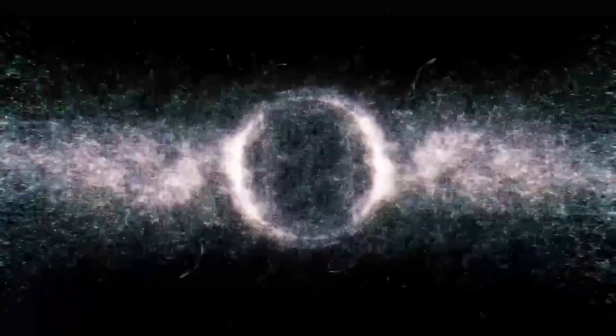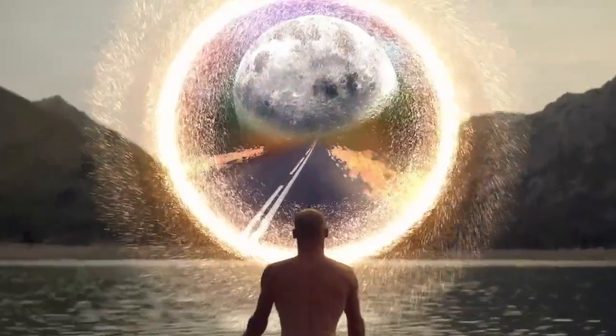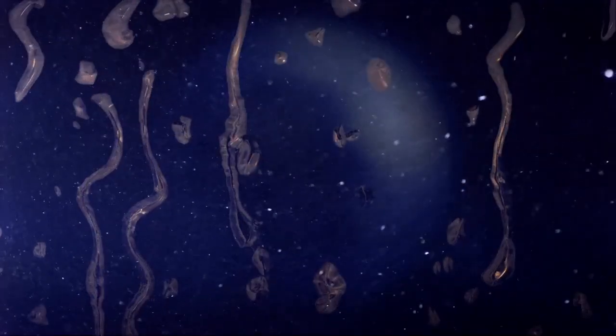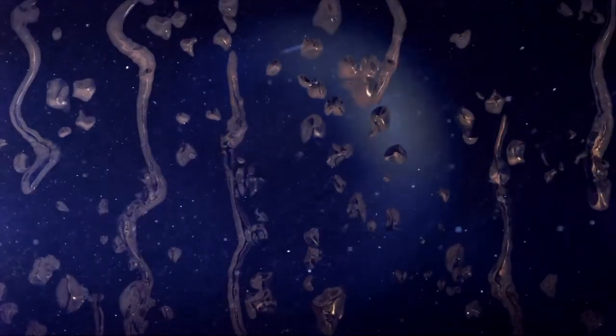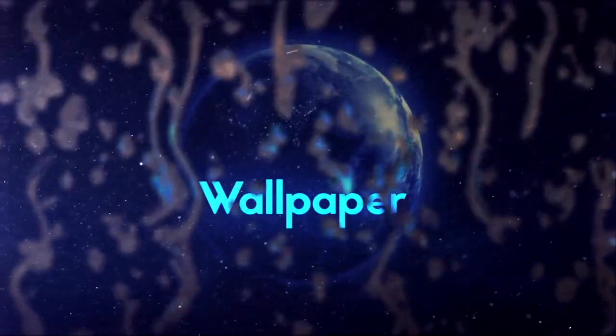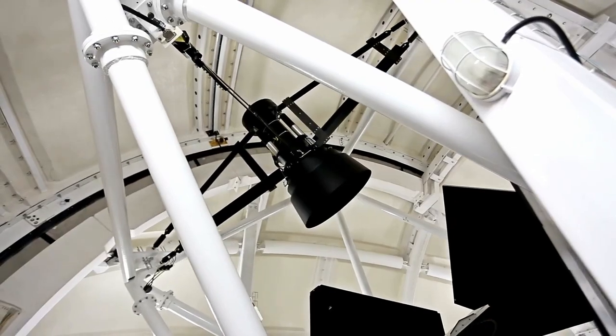But Webb's first glimpses shocked everyone. It found galaxies formed just 290 million years after the Big Bang, far earlier than models predicted. These early galaxies aren't small or faint. They're massive and surprisingly evolved.